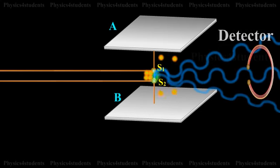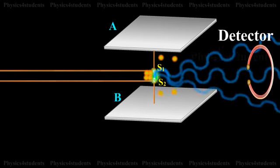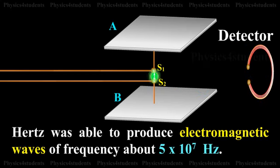A spark is produced between S1 and S2 and electromagnetic waves of high frequency are radiated. Hertz was able to produce electromagnetic waves of frequency about 5 × 10^7 Hertz.